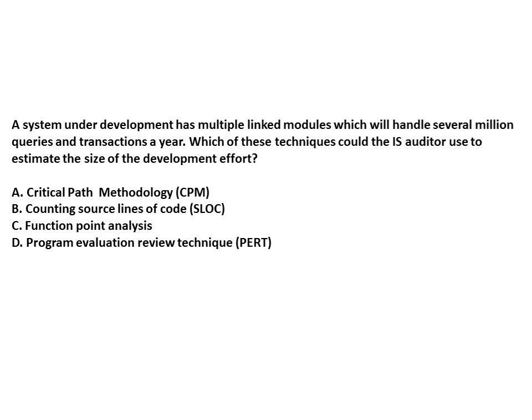Question: A system under development has multiple linked modules which will handle several million transactions per year. Which technique could an IS auditor use to estimate the size of the development effort? Two methods exist: FPA and SLOC (counting source lines of code). FPA is an indirect method for software size estimation, useful for evaluating complex applications. SLOC gives a direct measure of program size but does not account for complexity caused by multiple linked modules and a variety of inputs and outputs.